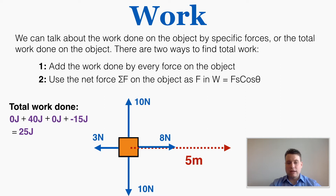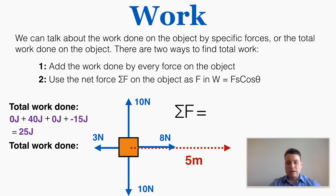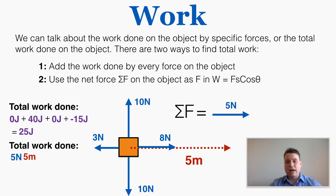The other way to calculate total work is by finding the net force. Canceling the 10 going up and the 10 going down, and the 3 taking away from the 8, gives a total net force of 5 Newtons to the right. The net force is 5, the displacement is 5, and there's no angle between them, so the total work is 25 joules — the same result by both methods.